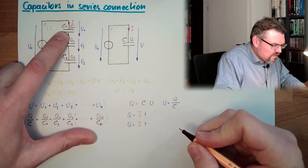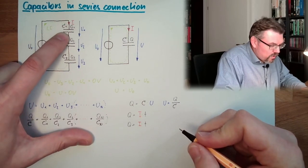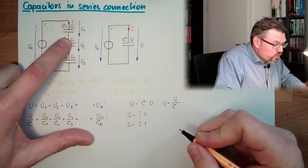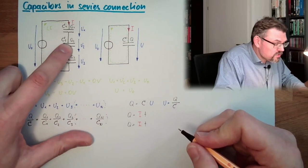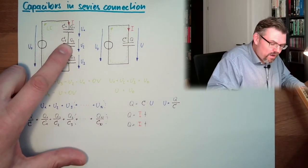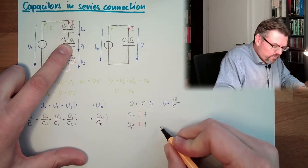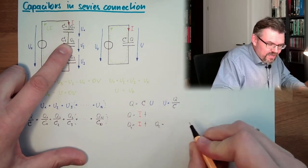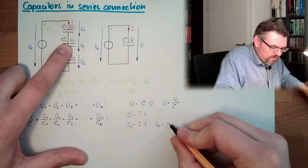And this i is also going out of this capacitor. So q2 is also i, because there is also that i running in. It's the same amount of time. So q1 and q2 is exactly the same i multiplied by t.